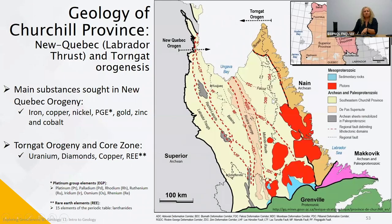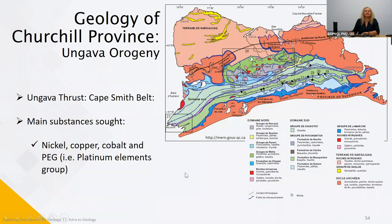Moving on to the Churchill Province in New Quebec and the Torngat areas, the main substances explored are iron, copper, nickel, PGEs (platinum group elements), gold, zinc, and cobalt. In the Torngat area we have uranium, diamonds, copper, and REEs (rare earth elements). At the top of Quebec in Nunavik, the Churchill Province corresponds to the Cape Smith Belt, which is mainly explored for nickel, copper, cobalt, and PGEs. In recent years there has been more and more gold exploration. The position of the Raglan mine is shown here.